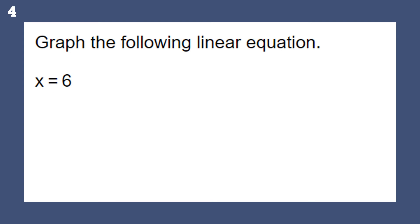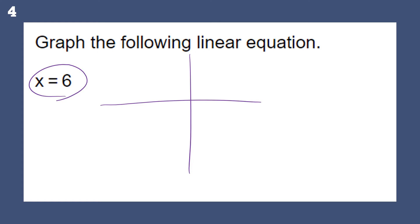Graph the following function. This function is kind of funny to look at because it's not a y equals, it's an x equals. Every point on that line is at x equals 6 — all points have the same x value. This is a vertical line at x equals 6. All vertical lines are x equals and all horizontal lines are y equals.